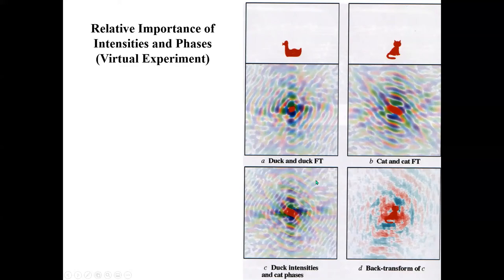I'd like to do a virtual experiment here. We've talked about both intensities and phases — the phases are what we lost, the intensities are what we capture. But what's more important, the intensities or the phases? Here's our duck and here's its transform. This time the transform is in color because we've colored it by the value of the phase at each point: red for phases between 0 and 90 degrees, yellows and greens between 90 and 180, blues between 180 and 270, and purples from 270 to 360.